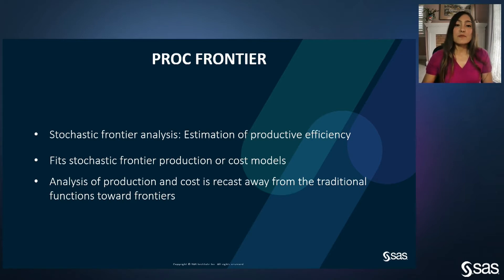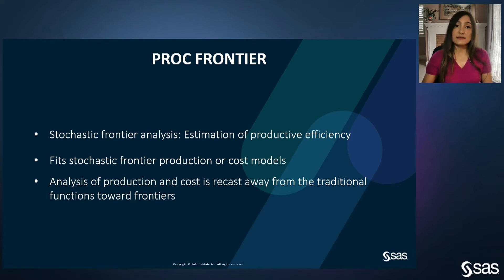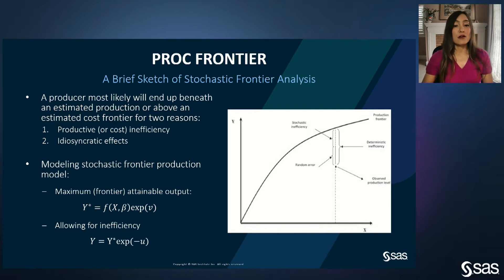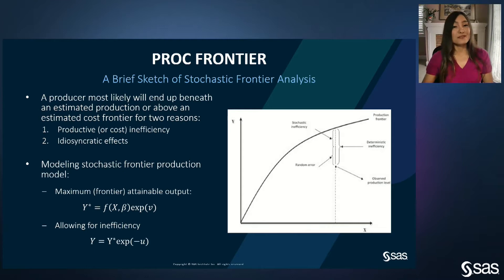Stochastic frontier analysis can be applied to any problem where the observed outcome deviates from the potential outcome in one direction — that is, the observed outcome is either less or more than the potential outcome. There are two reasons a producer may end up beneath an estimated production frontier or above an estimated cost frontier: technical inefficiency, which always causes suboptimal production levels, and environmental effects, which are random and can be favorable or unfavorable.